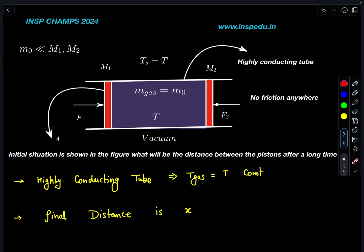Mass of gas is negligible compared to the masses of pistons. Cross-section area is given as A, and there is no friction anywhere. Initial situation is shown in the figure. They are asking in the question: what will be the distance between the pistons after a long time?